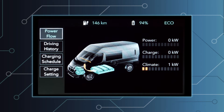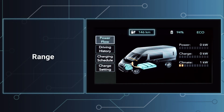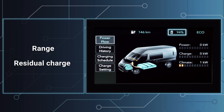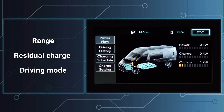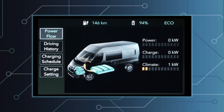The range and the percentage of remaining charge are always shown at the top of the display. The selected driving mode, if different from normal — i.e., eco or power — appears on the right.